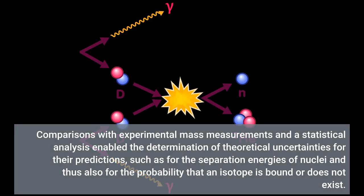Comparisons with experimental mass measurements and a statistical analysis enabled the determination of theoretical uncertainties for their predictions, such as for the separation energies of nuclei and thus also for the probability that an isotope is bound or does not exist.